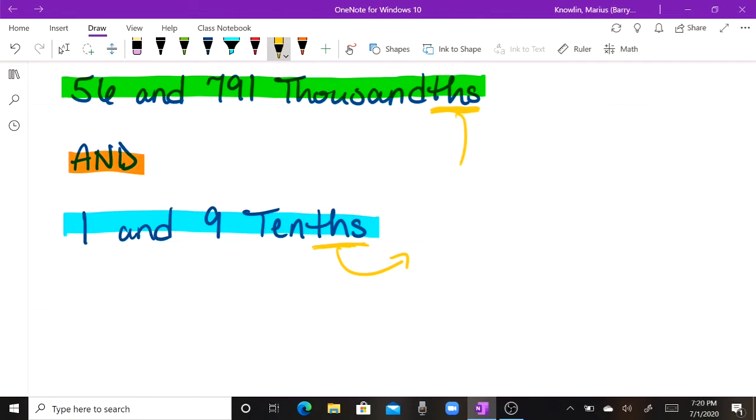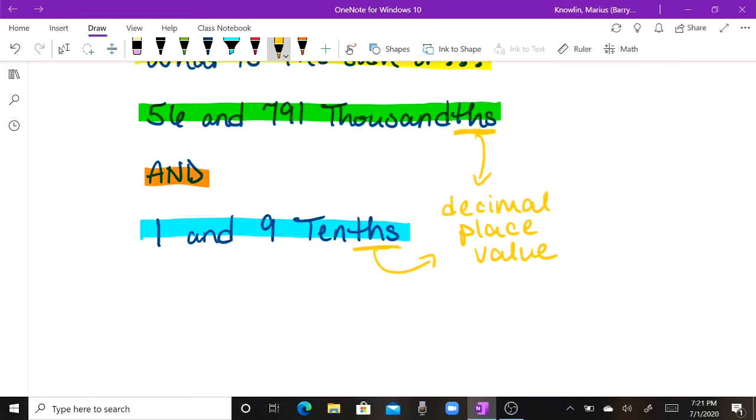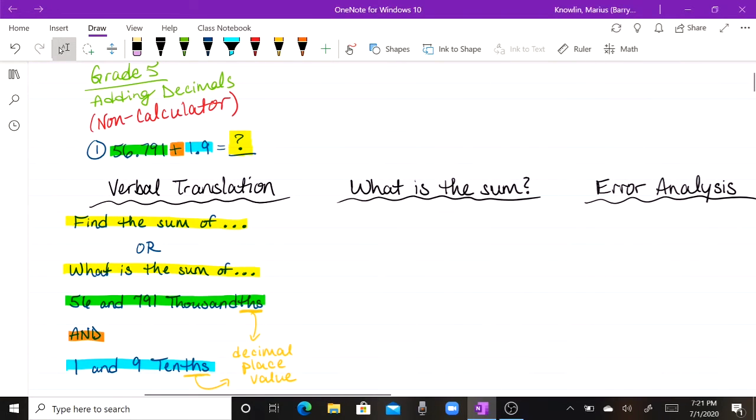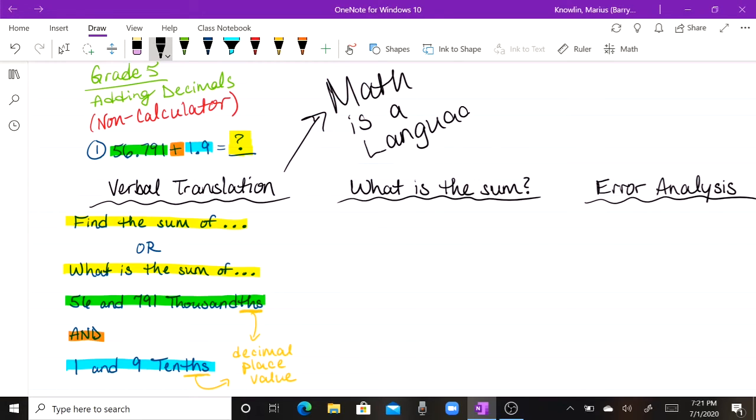But once again, the THS represents decimal place value. All right, let's take a look. We got a nice look at that right there. So that was the verbal translation. And just to bring some more attention to that, the verbal translation is because I like to say that math is a language. Because math is a language, it's important to know how to read it, write it, and say it.